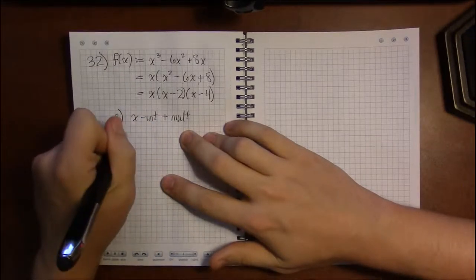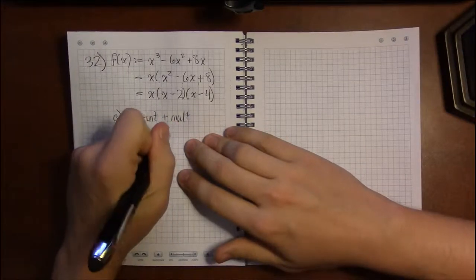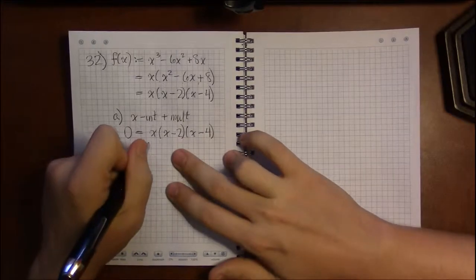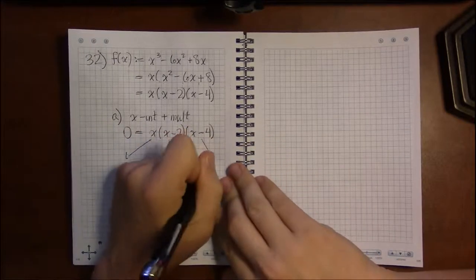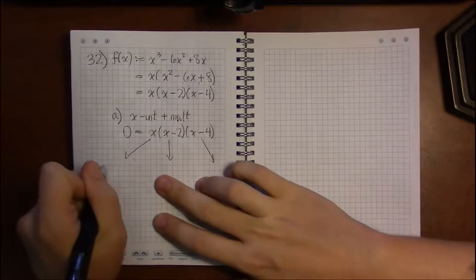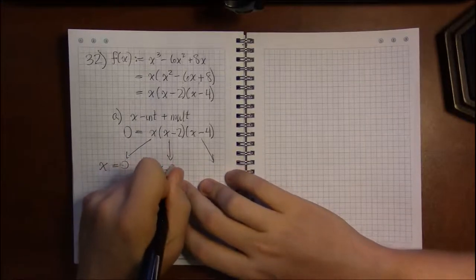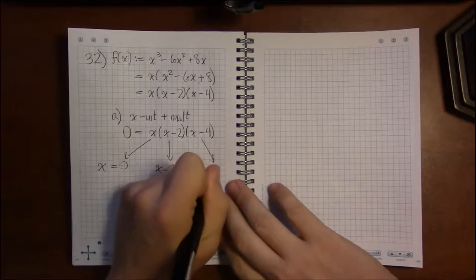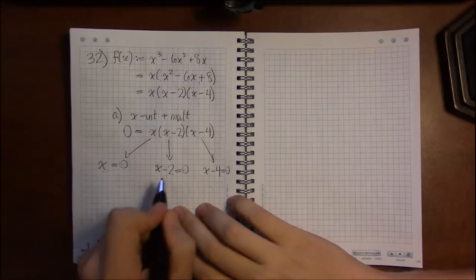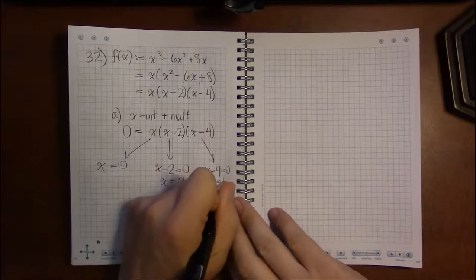So to find x-intercepts we start off by setting y or f(x) equal to 0, and on the right hand side I'm going to use the factored form. I use the factored form because that's what enables me to break this up into three separate equations. I can't do that in this form alone. I have to get to the factored form so that I can say well either x equals 0, or (x-2) equals 0, or (x-4) equals 0. And all these are fairly easy. This one's done. x equals 0 is already done. Here I'm going to add 2 to both sides, and in the next one it's 4 to both sides.